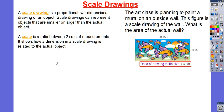Let's go ahead and see how we would solve a problem like this. The art class is planning to paint a mural on an outside wall. The figure is a scale drawing of the wall. What is the area of the actual wall? First, we need to figure out what our unit rate is. Then, we're going to convert all of those inches into feet. And then, afterwards, we're going to go ahead and calculate our area.